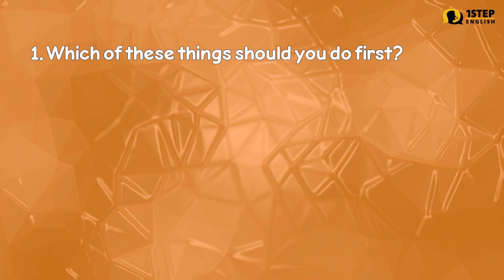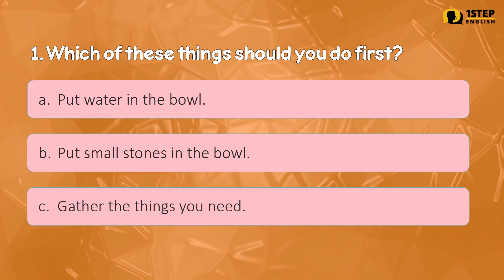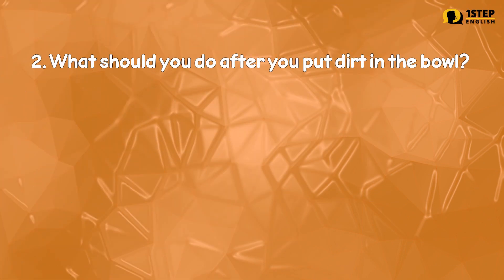Number one: which of these things should you do first? Letter A: put water in the bowl. Letter B: put small stones in the bowl. Letter C: gather the things you need. The correct answer is Letter C — gather the things you need.